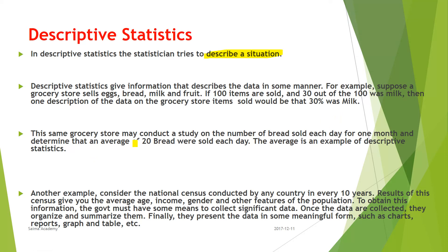The same grocery store may conduct a study on the number of breads sold each day for one month and determine that the average is 20 breads per day — that average is an example of descriptive statistics. Another example is the national census conducted every 10 years, which gives average age, income, gender, and other features of the population. The government collects, organizes, and summarizes this data and finally presents it in the form of charts, reports, graphs, and tables.